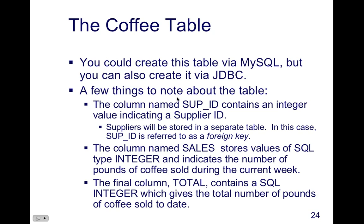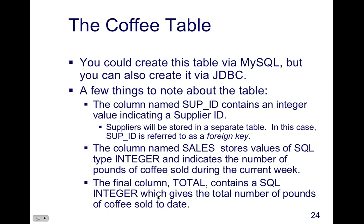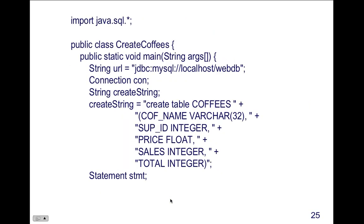The table has columns named supplier ID, which contains an integer value indicating the supplier ID, stored as a foreign key. This is where your knowledge of SQL really comes in handy — knowing how to identify a column as a foreign key, a primary key, and how to put constraints like NOT NULL. You can see all the data types associated with each column. There's also a 'sales' column storing SQL integer values, and a 'total' column that is also an integer, as depicted in the last example.